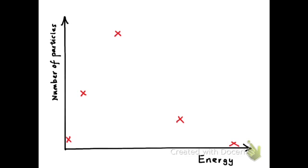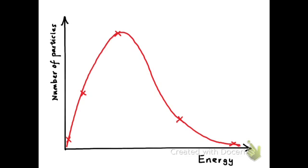When they plotted all their points, the graph they came up with had a characteristic shape — that's now the shape we associate with a Maxwell-Boltzmann distribution, and it shows us the variety of different energies that particles within a gas sample might have.